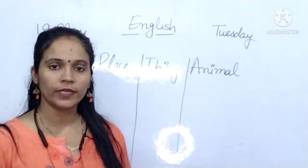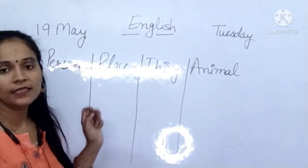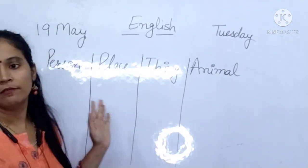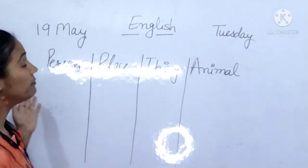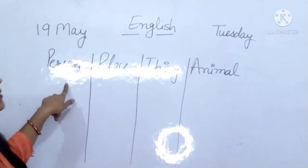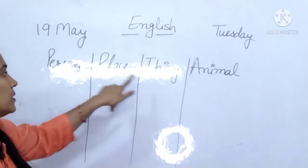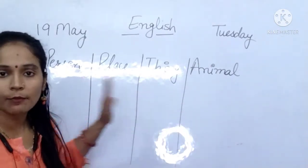So students, this is a table. In this table we will write person name, place name, thing, and animal. Isse aapko clear ho jayega.